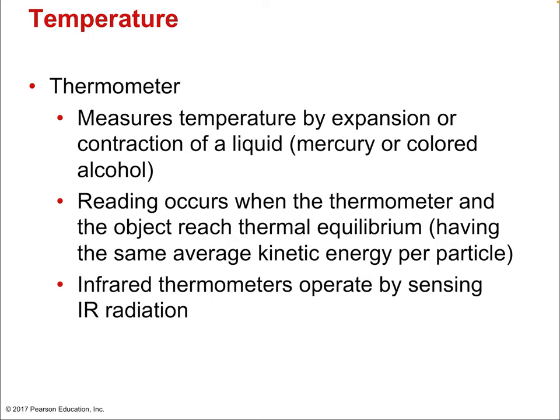A thermometer is a device that measures temperature by the expansion or contraction of a liquid — mercury or colored alcohol. The reading occurs when the thermometer and the object have reached thermal equilibrium. That's why it takes a moment to get a good temperature reading — it's not instantaneous; you have to wait for the thermometer to reach the same temperature as the substance. This idea of thermal equilibrium is really important for the laws of thermodynamics. There are also infrared thermometers that read temperature based on the light emitted by an object, since there's a direct relationship between temperature and color.